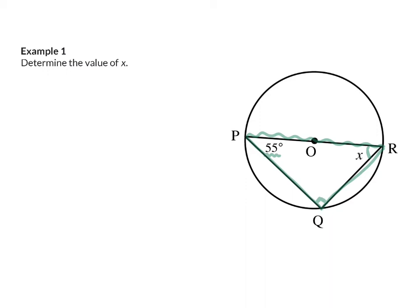Firstly, I am going to state that angle Q is 90 degrees. My reason for this: angle in a semicircle. Next, I can calculate x by saying it is 180 degrees minus the other two angles in that triangle, 55 degrees and 90 degrees. My reason for this: interior angles of a triangle. This means that x is 35 degrees.